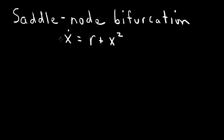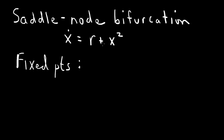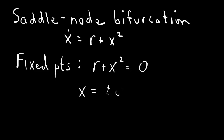To understand how this bifurcation works, we do two things: first we find the fixed points, and second we determine the stability of the fixed points. The fixed points satisfy x-dot equals 0, so we have r plus x squared equals 0, or x squared equals minus r. Therefore x equals plus or minus the square root of minus r.